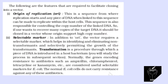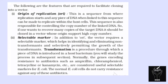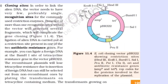The normal E. coli cells do not carry resistance against any of these antibiotics. Number 3: Cloning Sites. In order to link the alien DNA, the vector needs to have very few, preferably single, recognition sites for the commonly used restriction enzyme.